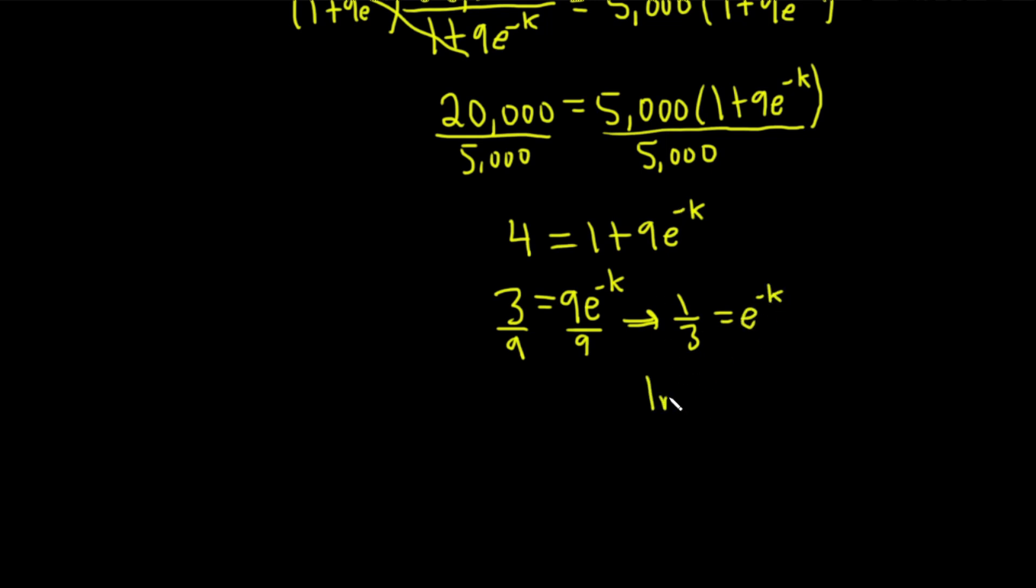We can take the natural log of both sides, so we get ln(1/3) equals ln(e to the negative k). This is a key step. Whenever you're trying to get rid of an e in a problem like this, you want to take the natural log because there's a formula that says if you have the natural log of e to the x, that equals x.